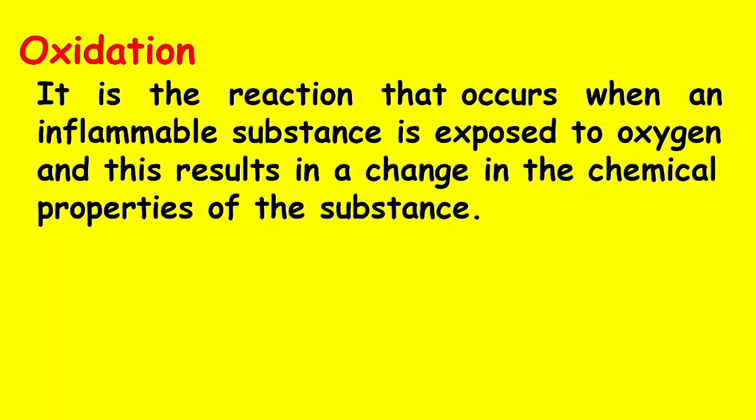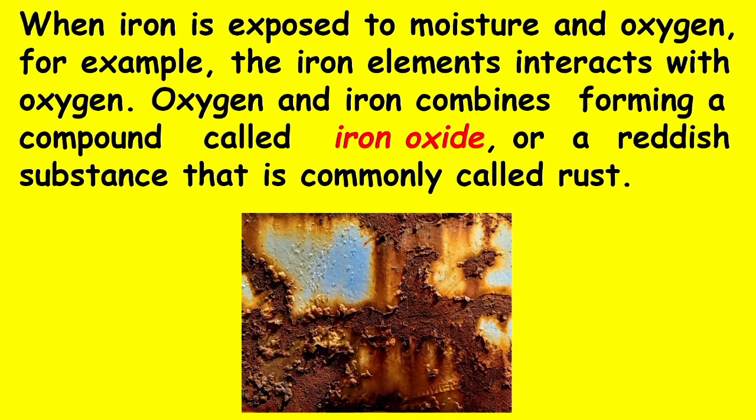Another reaction that promotes chemical change is oxidation. It is the reaction that occurs when a flammable substance is exposed to oxygen, resulting in a change in the chemical properties of the substance. When iron is exposed to moisture and oxygen, the iron element interacts with oxygen. Oxygen and iron combine, forming a compound called iron oxide — a reddish substance commonly called rust.